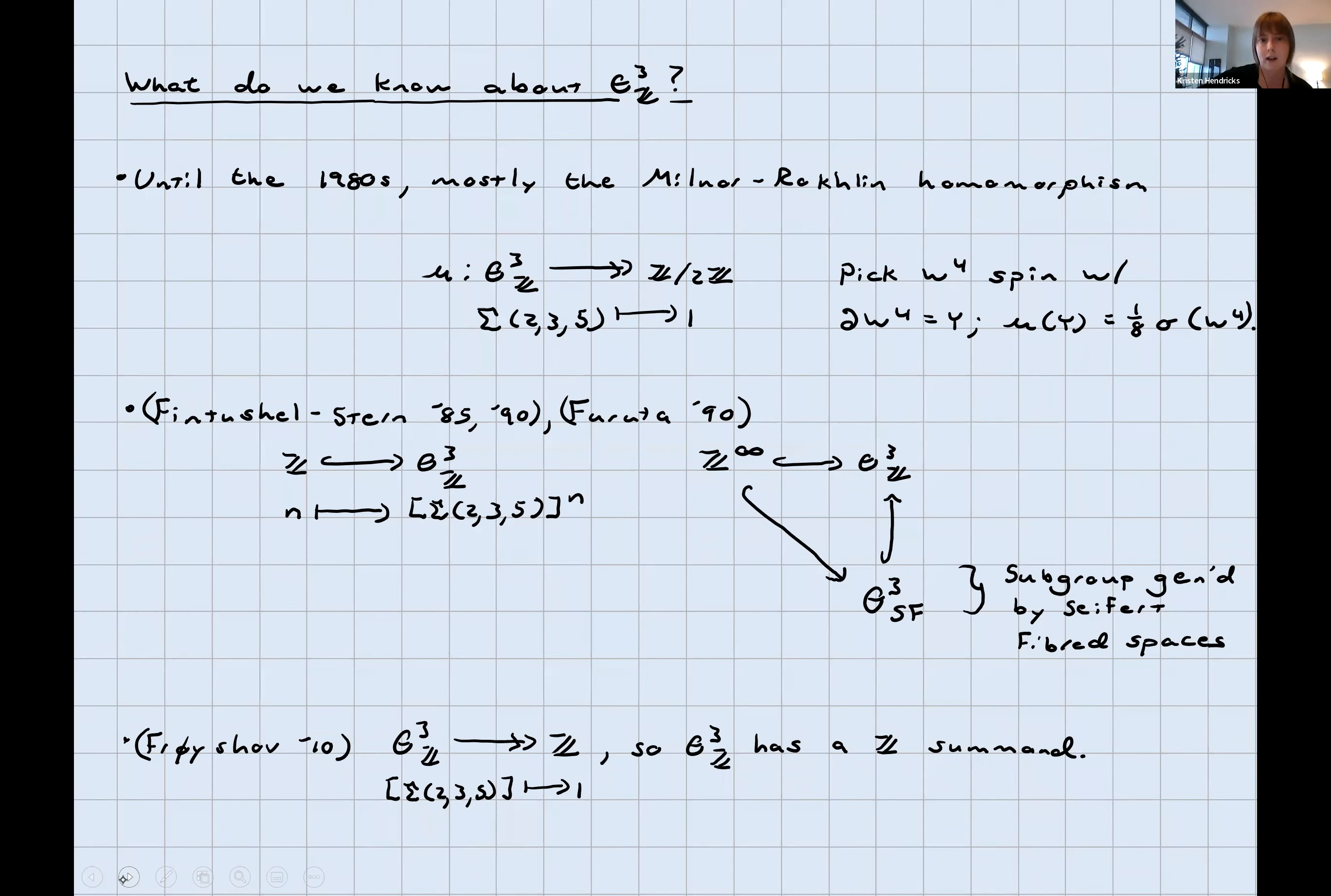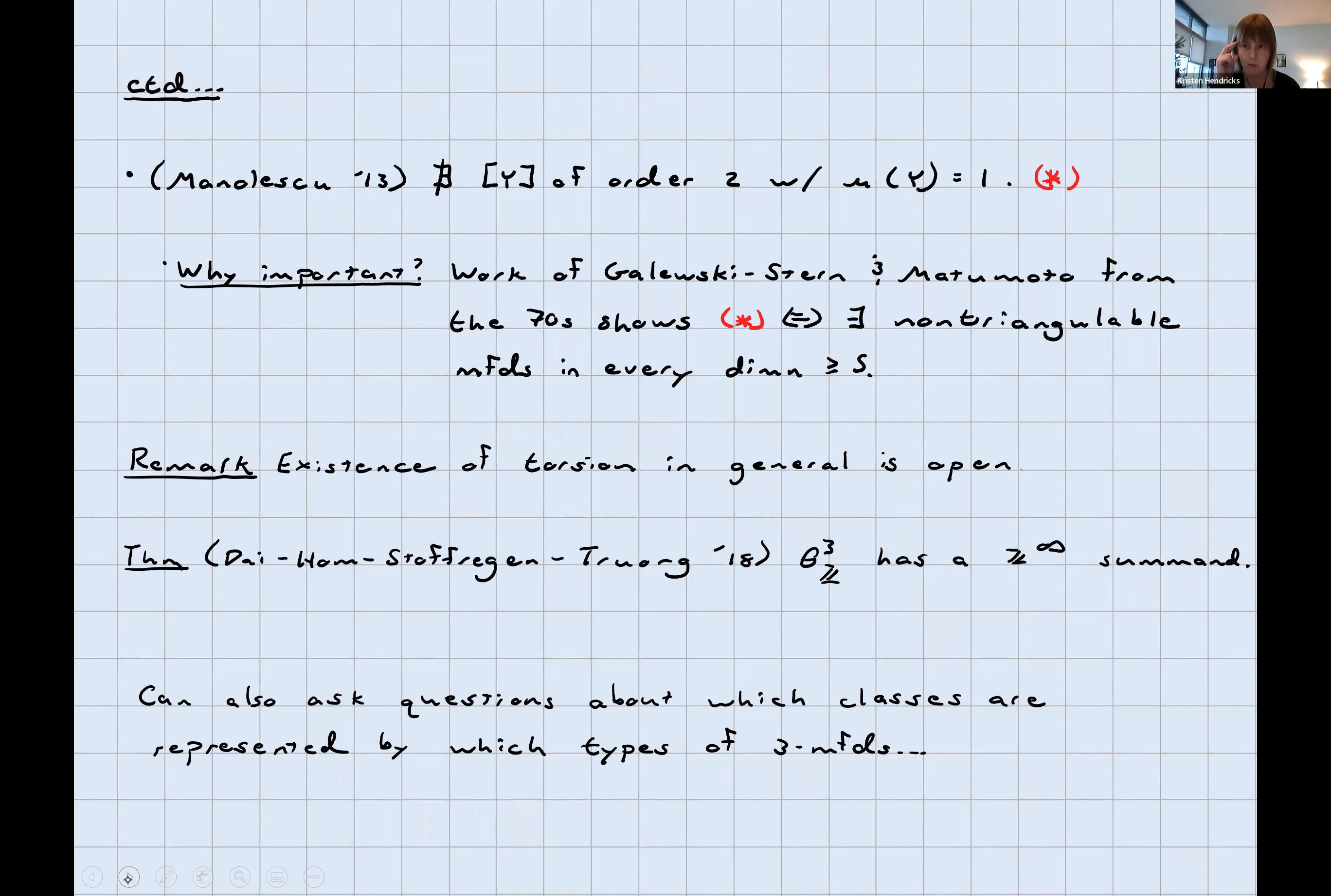Once we got gauge theory in the early eighties, a lot of problems in low dimensional topology blew open. Fintushel-Stern in 85 and 90 and Furuta in 90 showed that this group is infinite. There's a Z subgroup coming from just the powers of the Poincaré homology sphere. That's an application of Donaldson's theorem. And then there's a Z infinity subgroup. The proof that there's a Z infinity subgroup goes through there being a Z infinity subgroup of the subgroup generated by the Seifert-fibered spaces. That is, closed-oriented homology spheres admitting an S1 action with no fixed points, of which the Brieskorn spheres are examples. Subsequently, Fershab in 2010 showed that this group surjects on the Z. That means it has a Z summand.